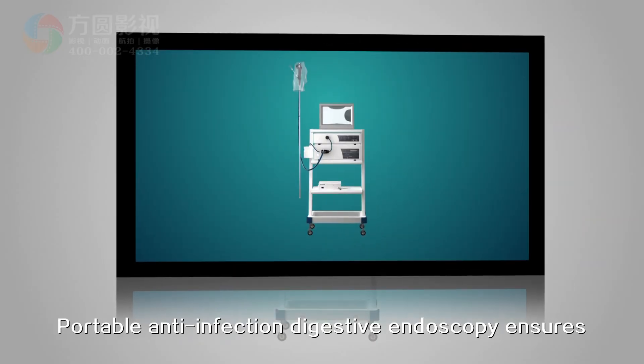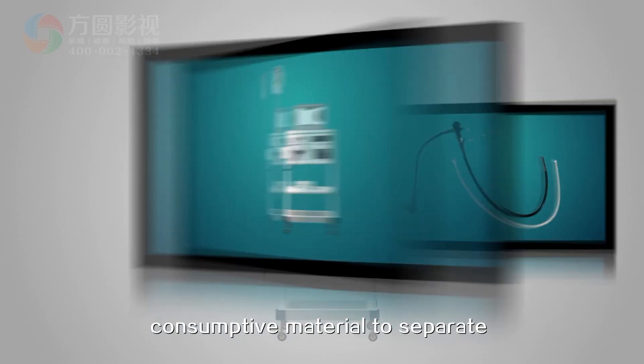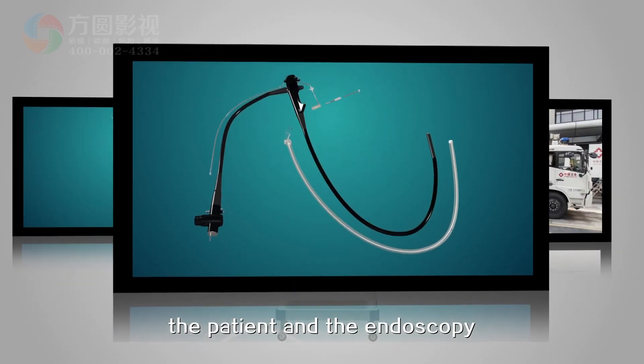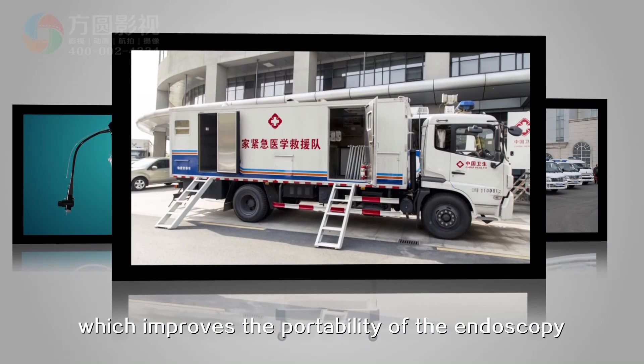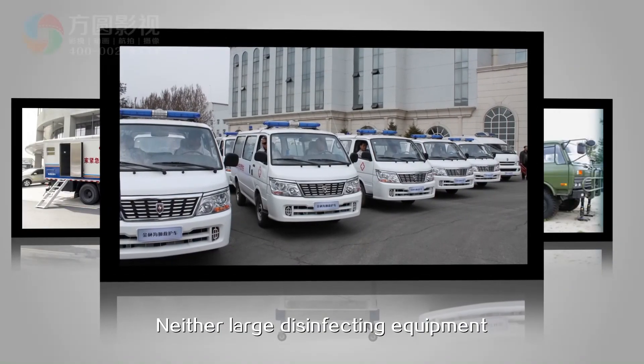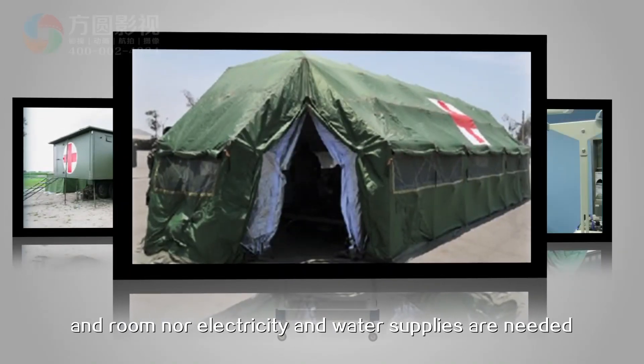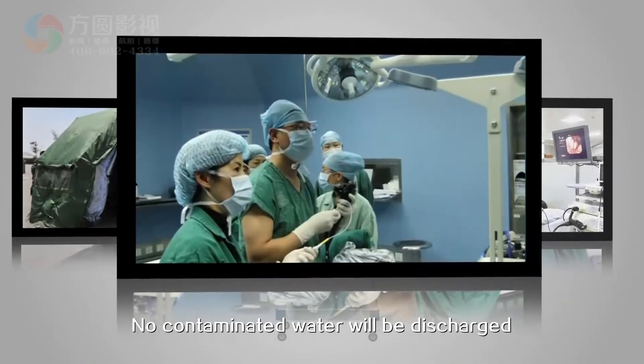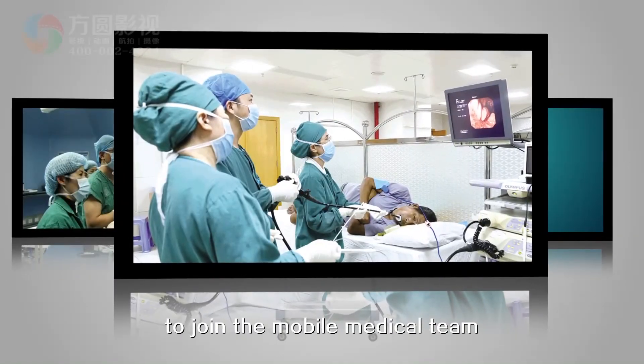Portable anti-infection digestive endoscopy ensures reliability by covering with consumptive material to separate the patient and the endoscopy. The consumptive material is small and easy to carry, which improves portability. It can be used under various conditions. Neither large disinfecting equipment and room nor electricity and water supplies are needed. No contaminated water will be discharged, which helps gastroenterologists to join mobile medical teams.